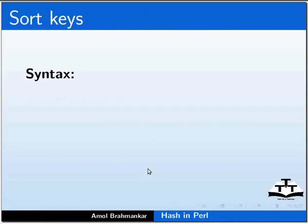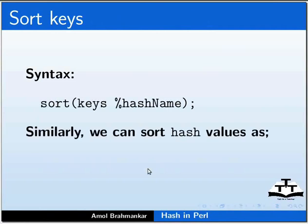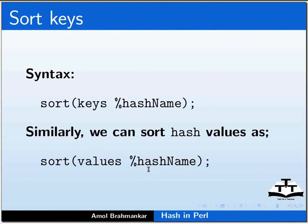Let us look at sorting of hash keys and values. The syntax to sort keys is: sort, open bracket, percentage hash name, close bracket, semicolon. Similarly, we can sort hash values as: sort, open bracket, values, percentage hash name, close bracket, semicolon.